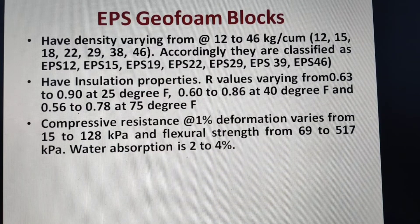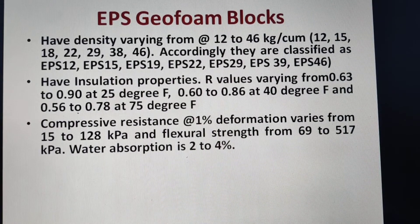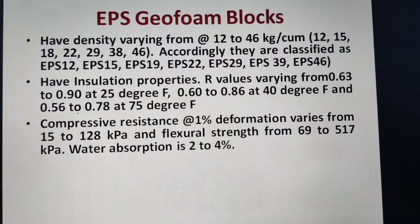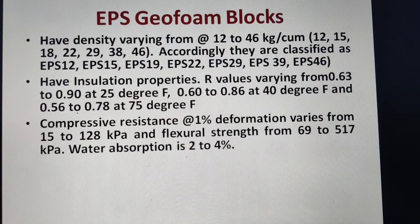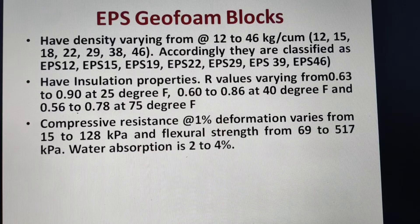The density is very low compared to brickwork, concrete, or RCC. Accordingly, they are classified as EPS 12, 15, 19, 22, 29, 39, and 46, with approximate densities of 12, 15, 18, 22, 29, 38, and 46 kg per cubic meter respectively.